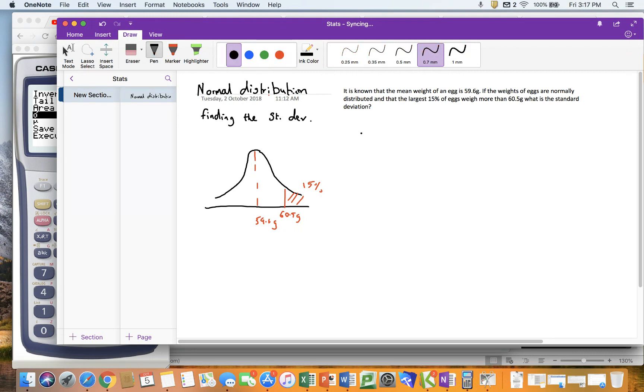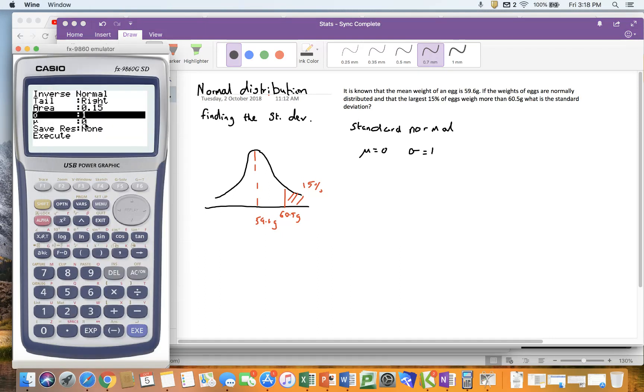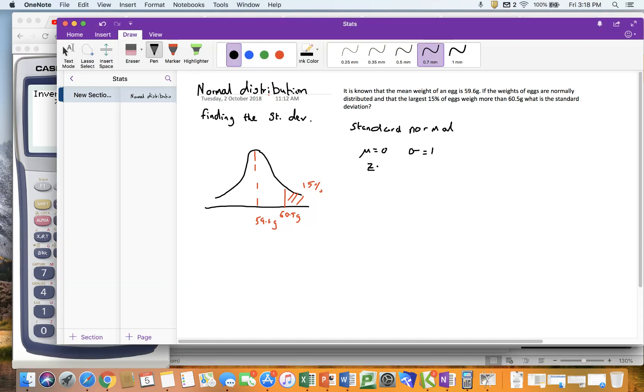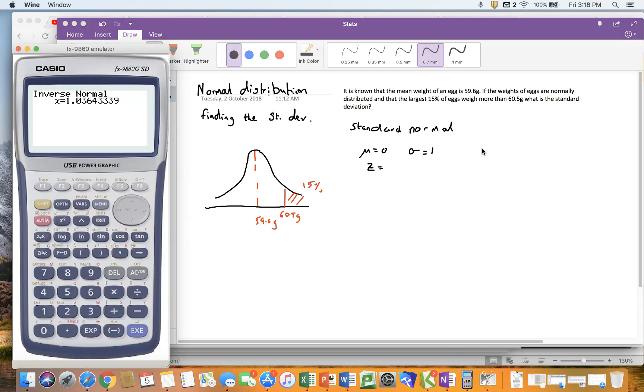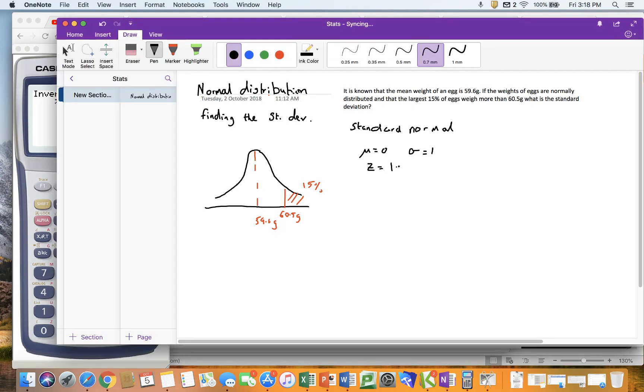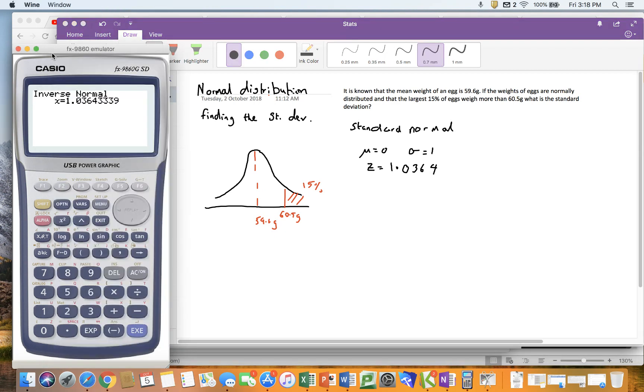The standard normal has mean of zero and standard deviation of one. So therefore in here I'm going to enter a mean of zero and standard deviation of one. What I calculate there is not a value on my scale, it is a z value. So I'm going to write z equals 1.0364. Again, I'm using more decimal places than I need to make sure that I get my answer at the end.